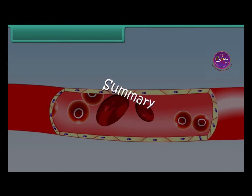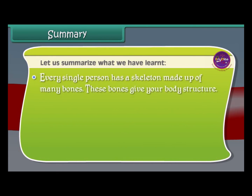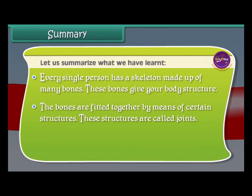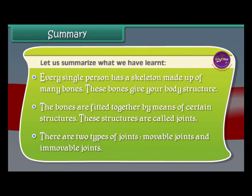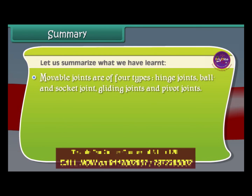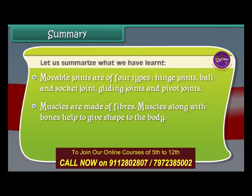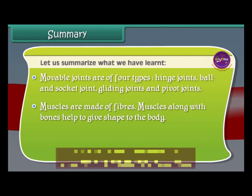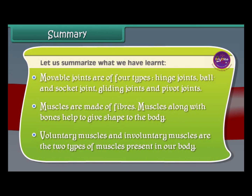Let us summarize what we have learned. Every single person has a skeleton made up of many bones, and these bones give the body structure. The bones are fitted together by means of certain structures called joints. There are two types of joints: moveable and immovable. Moveable joints are of four types: hinge joints, ball and socket joints, gliding joints, and pivot joints. Muscles are made of fibres and along with bones help to give shape to the body. Voluntary muscles and involuntary muscles are the two types of muscles present in our body.